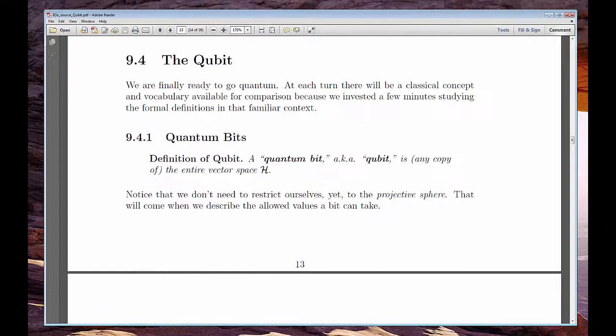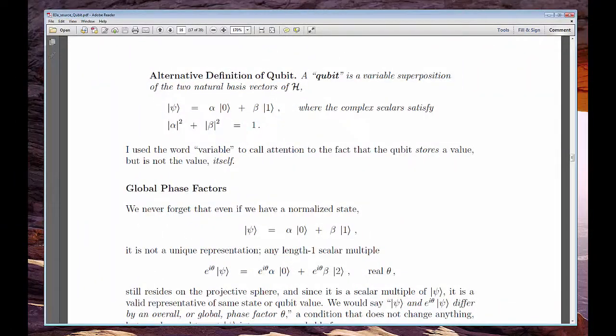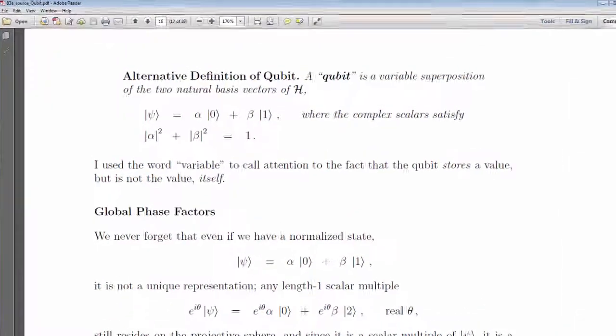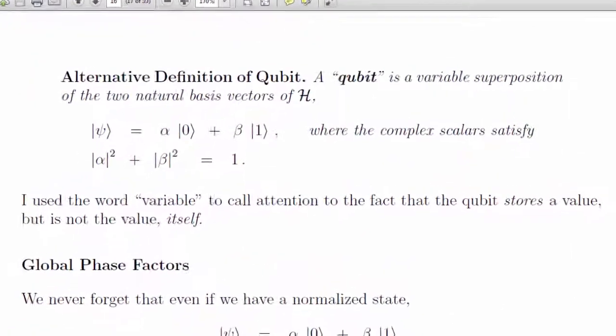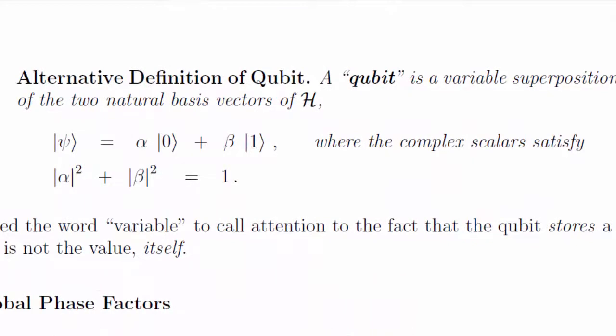There's a formal definition for a qubit which is a little counterintuitive, but I follow it quickly with the more common definition. You should read and understand both. This is the moment you've been waiting for since the first day of class. You can now look at the qubit with complete comprehension of what its individual parts mean. As you can see, it's any normalized superposition of the two natural Hilbert space basis vectors.